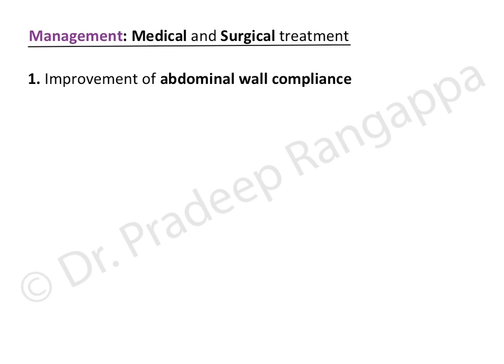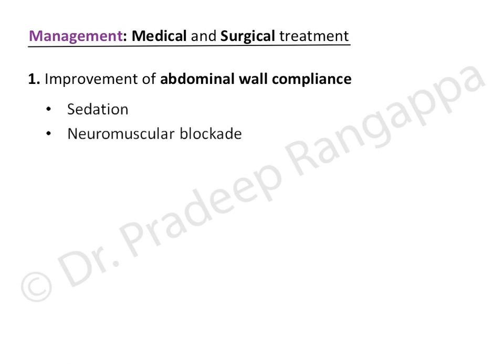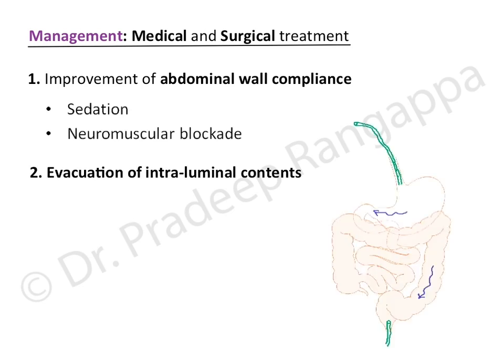Once intra-abdominal hypertension is identified, management focuses on improving abdominal wall compliance. Since intra-abdominal pressure increases during inspiration, a restless or agitated patient will drive pressures higher. Therefore, patients must be optimally sedated, and neuromuscular blockade may be needed if airway pressures keep rising.